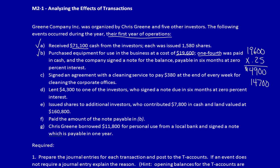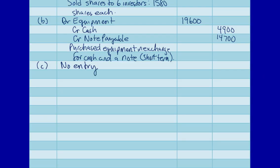Transaction C: signed an agreement with a cleaning service to pay $380 at the end of every week for cleaning the corporate offices. What did the business get? Nothing. What did the business give away? Nothing — this is going to happen in the future. It is measurable ($380) but it hasn't been realized, so no entry. Note: on a test, midterm, quiz, or exam you must write 'no entry' so the instructor can see your thought process. In a true accounting system we would simply do nothing, but on an assessment always put down 'no entry.'